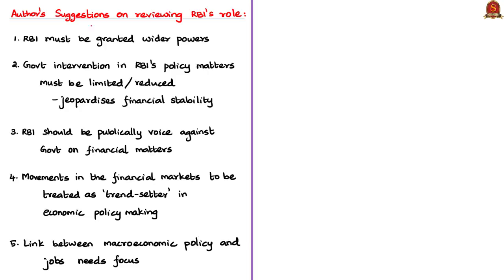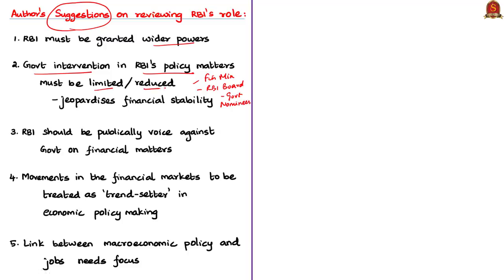In the second part, the author suggests granting wider powers to RBI to carry out its policies without government intervention. At present, the finance ministry and its nominees on the RBI board try to influence RBI's decisions. The author stresses limited government intervention in RBI's policy matters and says RBI should publicly voice its opinion against the government on financial matters. Economic policies should be designed based on movements in financial markets, and the government should focus on the link between macroeconomic policy and employment so that policies generate rather than cut employment opportunities.